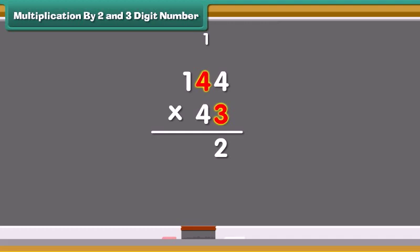3 times 4 equals 12 and add 1 which was carried forward. That is equal to 13. Write 3 in the tens place and carry the one forward to the hundredth place. Multiply 3 with the number on the hundredth place and add 1 which was carried forward. We write 4 in the hundredth place.